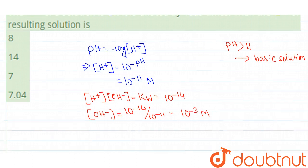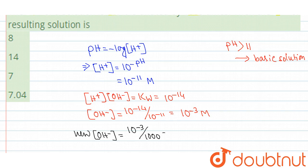Now the solution is diluted by 1000 times. So the new concentration of OH- will be 10 to the power minus 3 diluted by 1000 times, so that will be 10 to the power minus 6 molar.